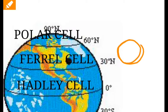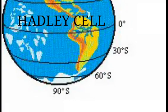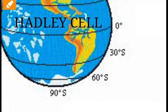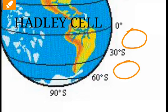Between 30 to 60 degree latitudes, the Ferrel cell is formed, and between 60 to 90 degrees, the polar cell is formed. To summarize: 0 to 30 degrees is the Hadley cell, 30 to 60 is the Ferrel cell, and 60 to 90 is the polar cell. If you find this video helpful, please subscribe and like.